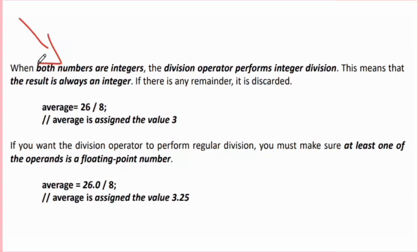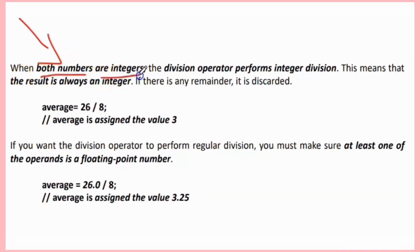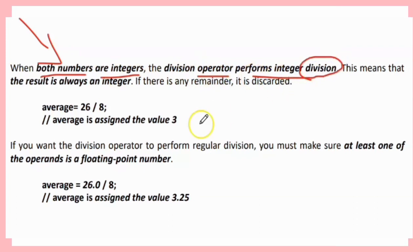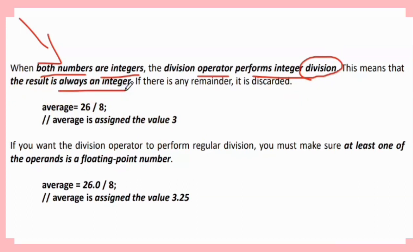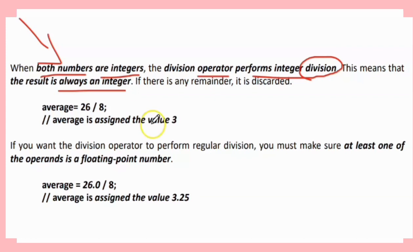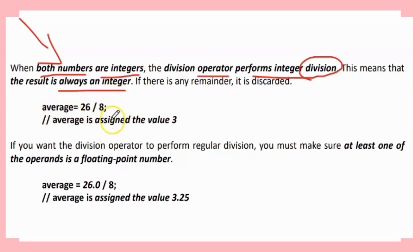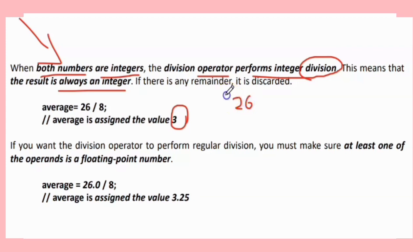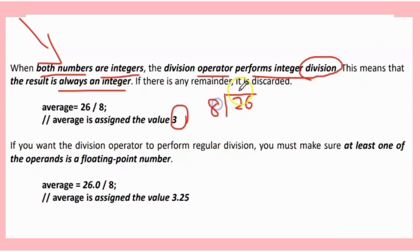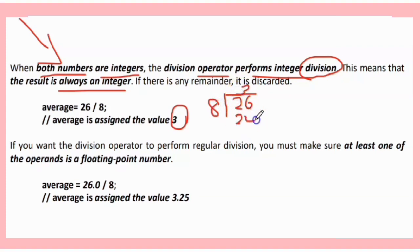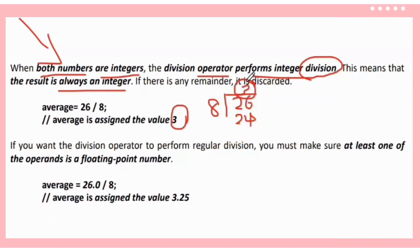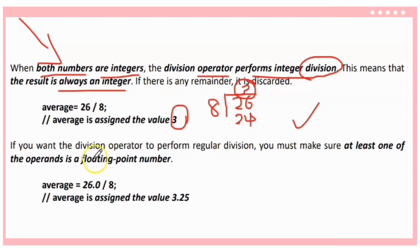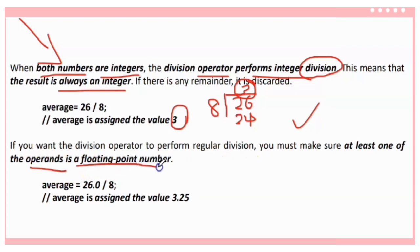Remember: if both numbers are integers, the division will perform integer division, meaning the result is always an integer and any remainder is discarded. For example, 26 divided by 8 gives 3 (the remainder is dropped). If you want the division to produce a floating point result, make sure at least one of the operands is a floating point number — for example, 26.0 / 8 gives 3.25.